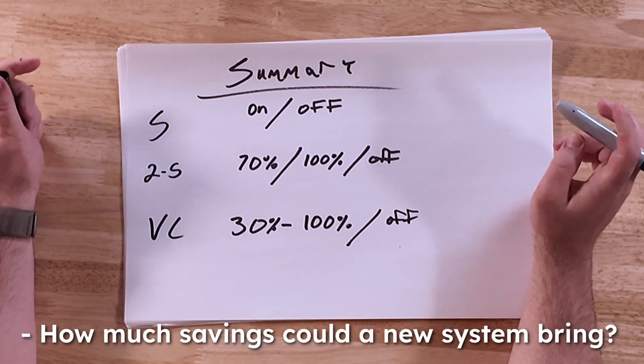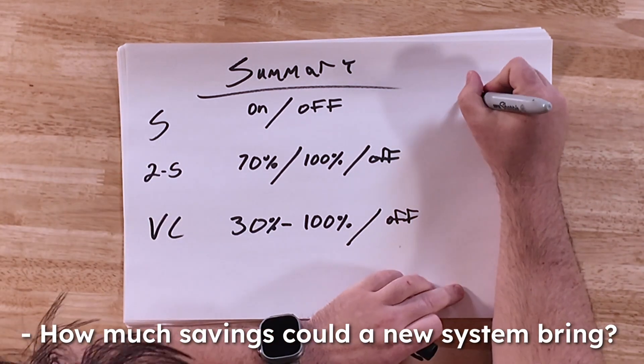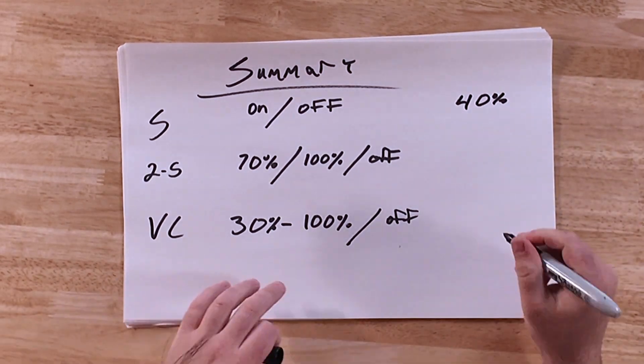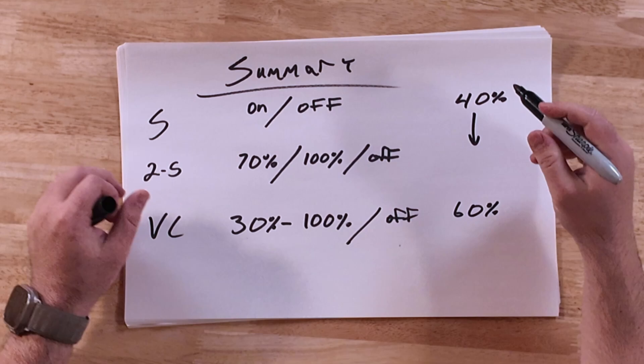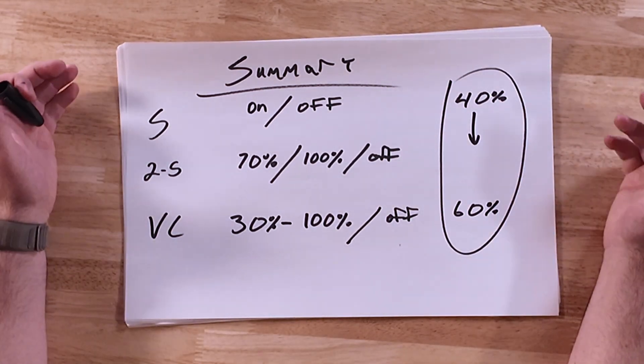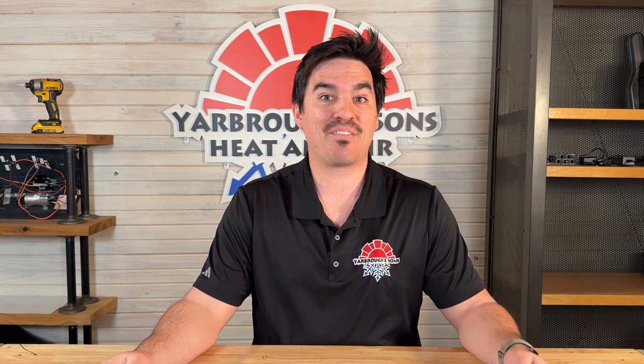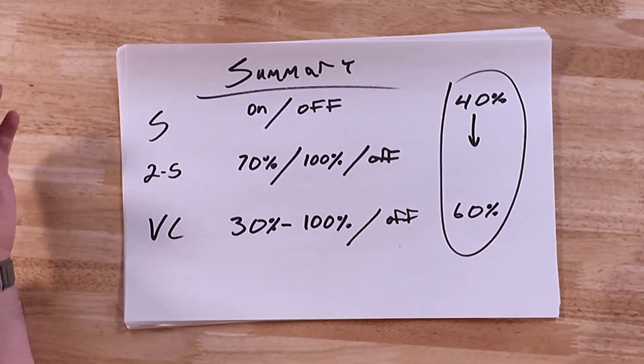A common question I get is: how much savings would I see on a new system compared to my old system? That varies. Based on national data we've seen over the years, comparing new single-stage equipment versus standard systems installed in 2008, you'll see anywhere from about 40% in savings up to close to 60% on the top end. We don't like talking about savings too much because it depends on usage, which is determined by the homeowner. Someone who keeps it at 70 degrees will use the AC a lot more than someone who sets it at 74.